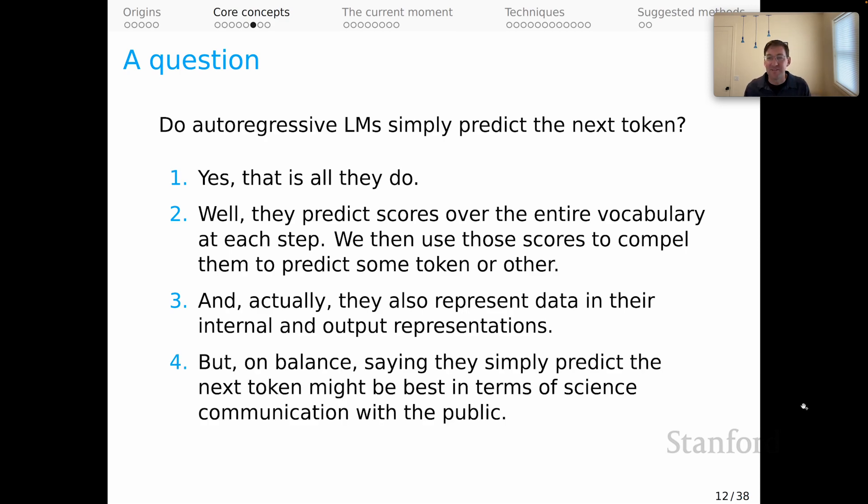But on balance, I would say that saying they simply predict the next token might be the best in terms of science communication with the public. You can talk in nuanced ways with your fellow researchers about what they're actually doing and how they represent examples. But out in the world, it might give people the best mental model if you simply say that they predict the next token based on the tokens that they have already generated and the ones that you put in. It's an appropriately mechanistic explanation that I think might help people out in the world calibrate to what's actually happening.